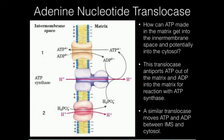Here I have the ATP previously made by ATP synthase, and I have to get it out of the matrix because there are other enzymes, particularly in the cytosol, that use ATP. I also need to get ADP into the matrix so it can react with ATP synthase. We'll look at how phosphate gets in during the next video.